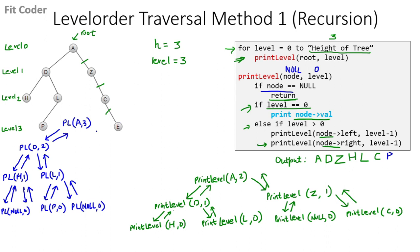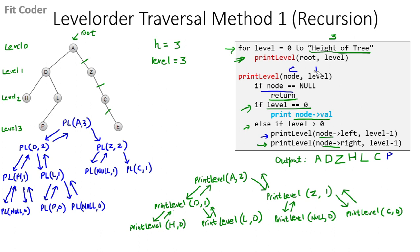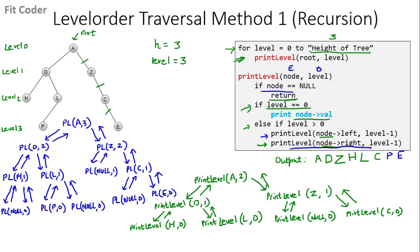We go back to (A, 3) and call for right of A which is Z at level 2. We come into the else part and call for left of Z which is null — we return. Then we call for right of Z which is C at level 1. Left of C is null — we return. Right of C is E, so we call (E, 0) and print E, then return. We return back through the call stack, the for loop terminates, and this is our level order traversal.